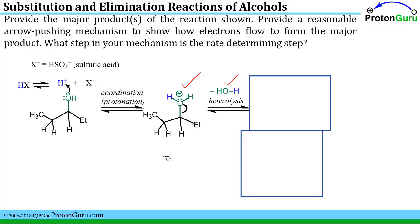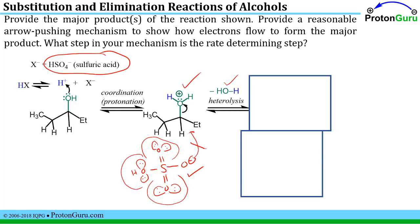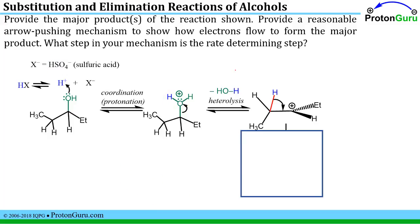Here we don't have bromide. Instead we have the anion resulting from deprotonation of sulfuric acid. Well if we draw out the Lewis structure of that conjugate base of sulfuric acid we see that it's really bulky. It's got all these groups with lone pairs. It's a terrible nucleophile so we can't do an SN2 reaction like we could with a good nucleophile bromide we saw in the previous question. So this intermediate species with the good leaving group will sit there until heterolysis takes place to lose water and then we have a carbocation.